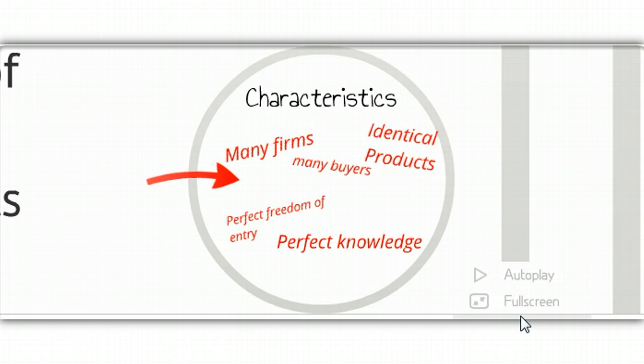It also relies on perfect knowledge. The perfect knowledge really refers to the consumers, that they know that there are many firms and many buyers, that they know the products are identical. If they know these things, what does this mean about the prices?